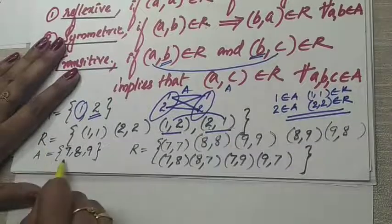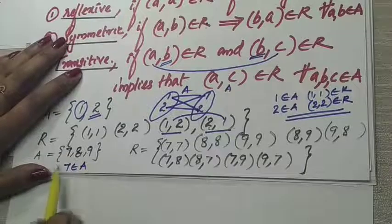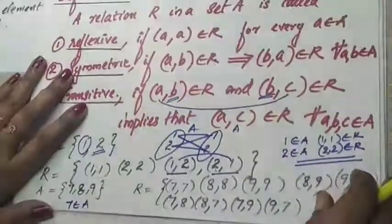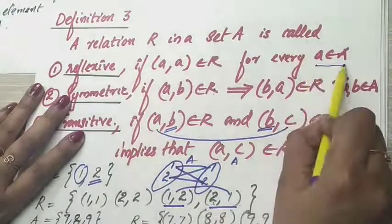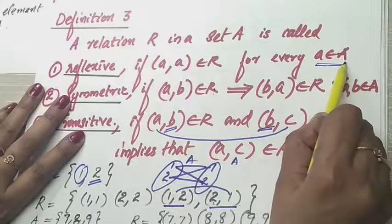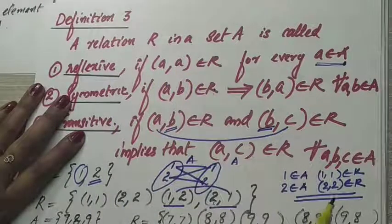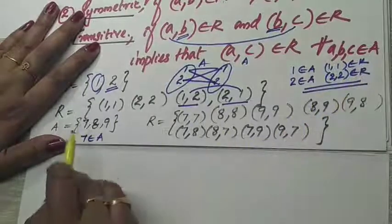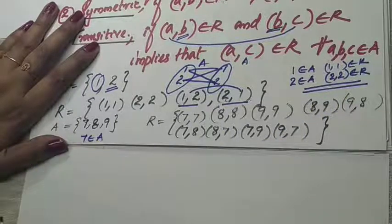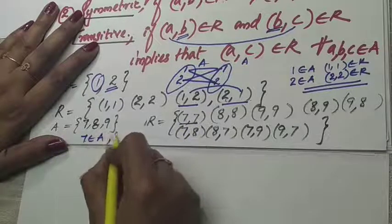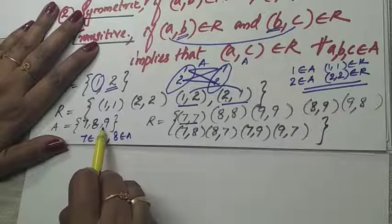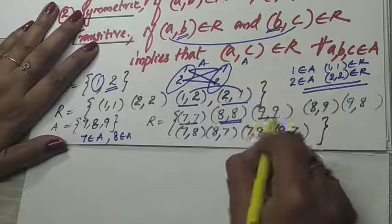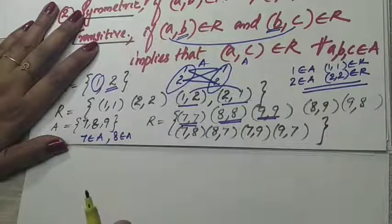First, reflexive: 7 belongs to A, so (7,7) should be in the relation — it is. 8 belongs to A, so (8,8) should be in the relation — it is. 9 belongs to A, so (9,9) should be in the relation — it is. All conditions are satisfied, so this relation is reflexive.